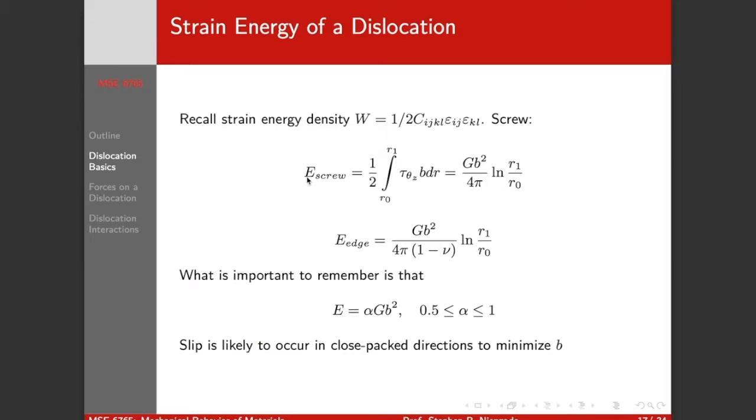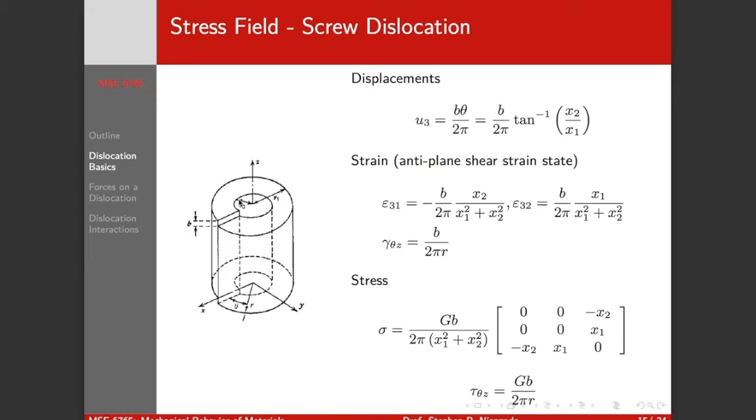Okay, so that strain field has a strain energy associated with it. Remember we defined our strain energy density to equal one-half sigma_ij epsilon_ij, or one-half the double contraction of stress with strain. We can replace stress with our stiffness times our strain. So this is nothing but our stress. And if we evaluate this, this is a strain energy density, so to get the total energy of the dislocation we have to integrate it. We're going to integrate it from some region R0 out to R1.